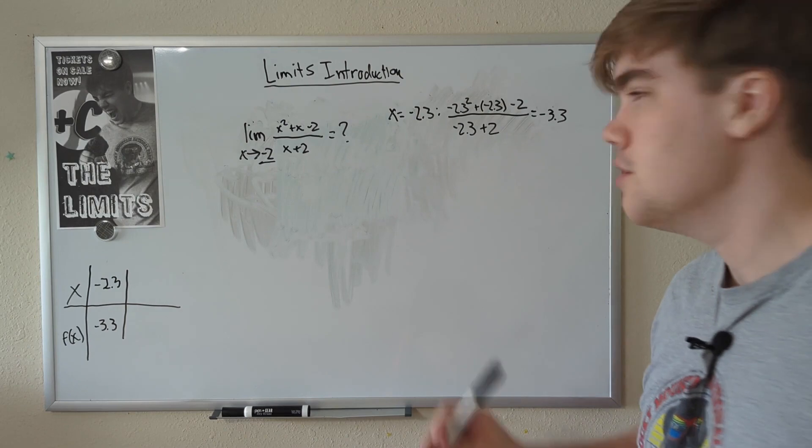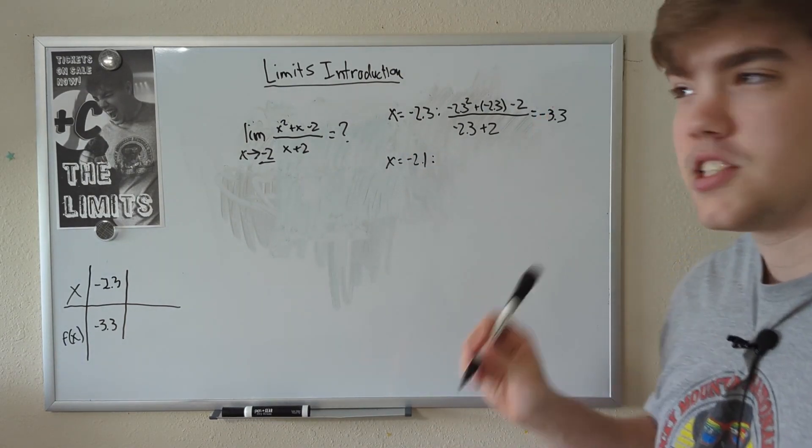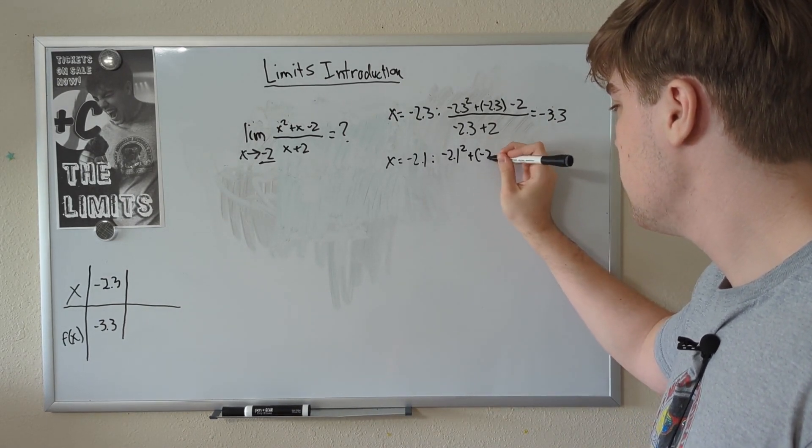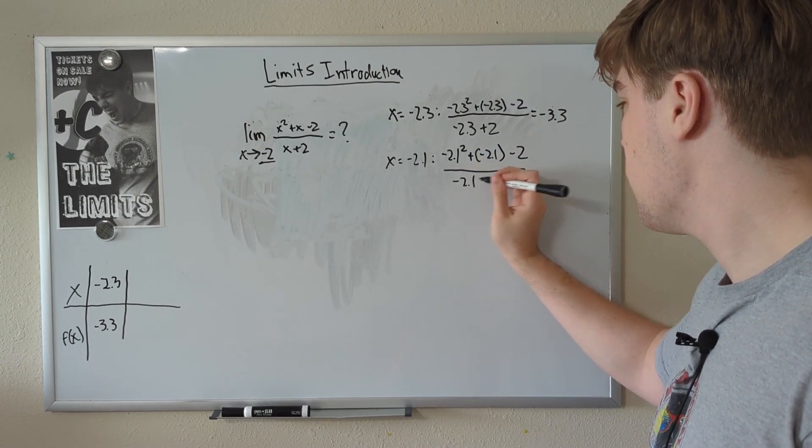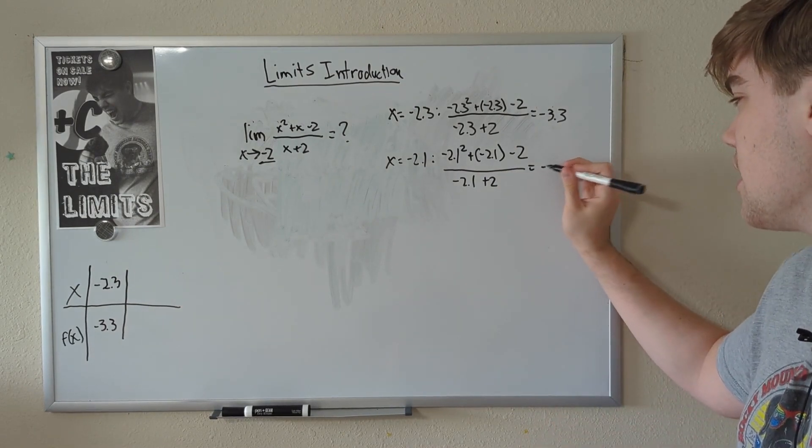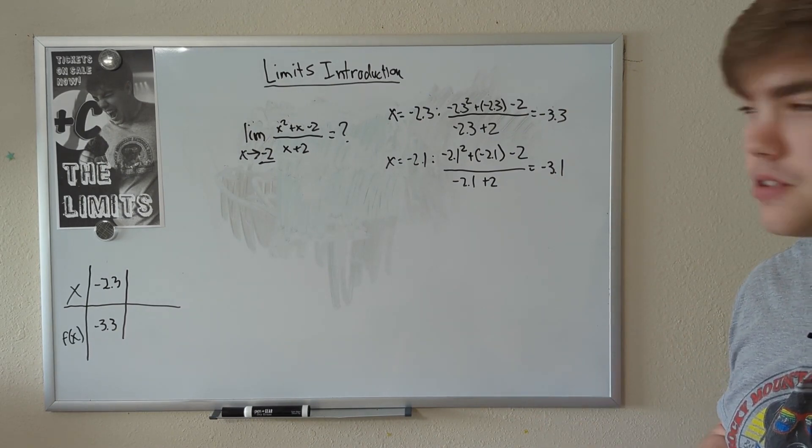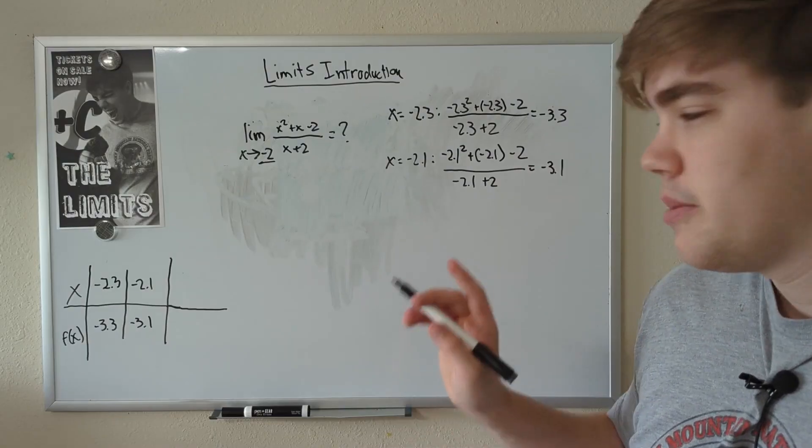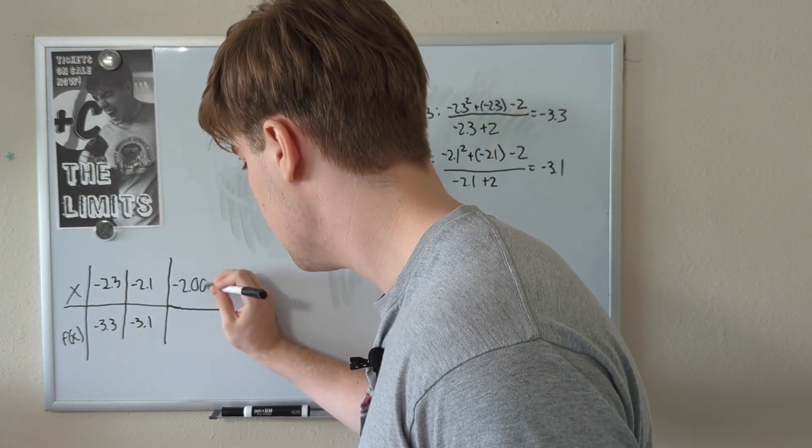Next, let's try something even closer to negative 2, such as x equals negative 2.1. Negative 2.1 squared plus a negative 2.1 minus 2 divided by negative 2.1 plus 2. Once again, I'm not going to show the simplification, but this is equal to negative 3.1. You may notice that we're approaching a number, but we're going to check a couple more things first. Let's plug in something extremely close to negative 2, such as negative 2.001. That's pretty close to being negative 2, but it's not, so we won't end up dividing by 0.